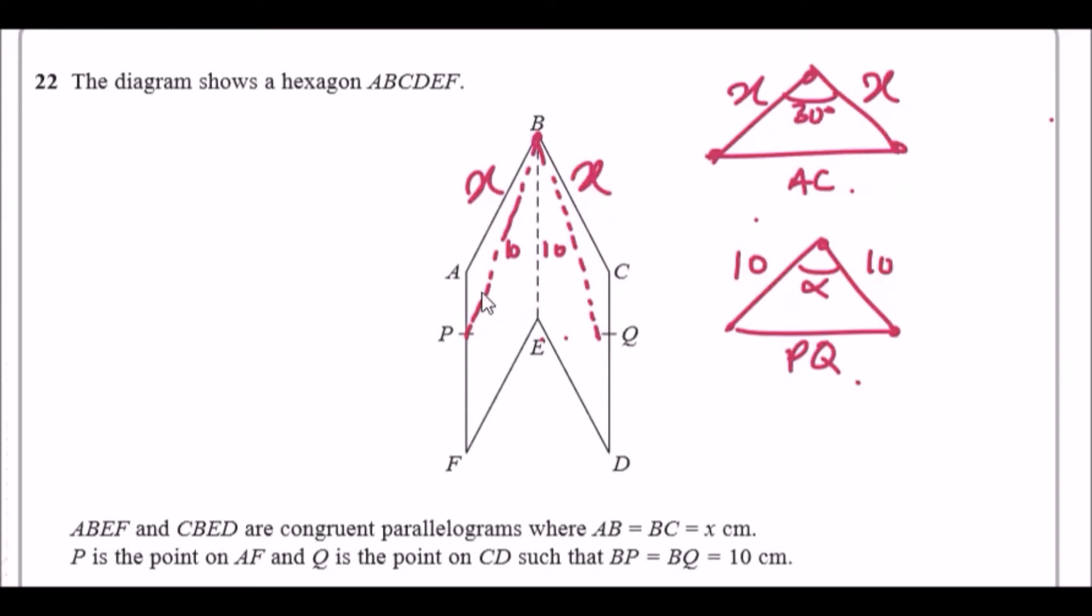We can assume now that the length AC is equal to length PQ. So these two lengths are actually the same, AC and PQ. So in fact you can go ahead and say they're the same. So therefore AC equals PQ.